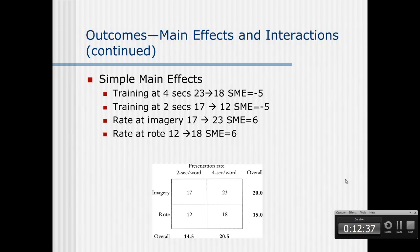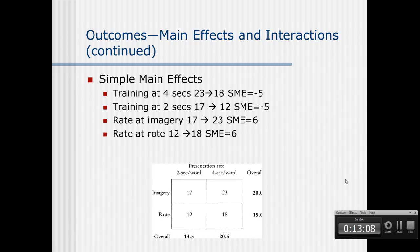We can also look at the simple main effect of rate at the imagery level — the change between 2 seconds per word (17 words) and 4 seconds per word (23 words) at imagery, which is a gain of 6 words. Finally, the simple main effect of rate at rote is the change between rote at 2 seconds (12 words) and rote at 4 seconds (18 words), also an increase of 6 words. These are the four simple main effects in this 2 by 2 table.